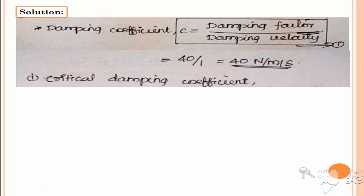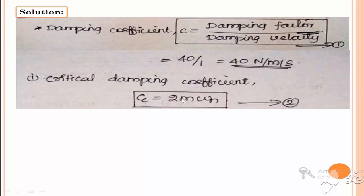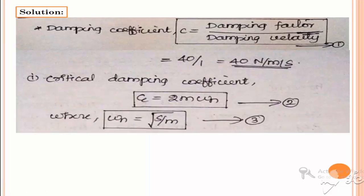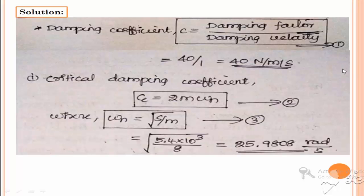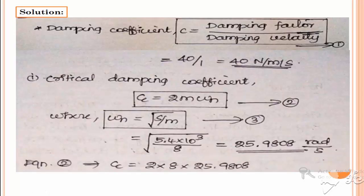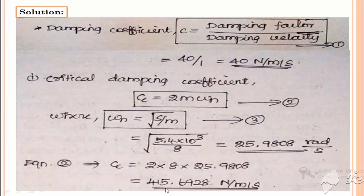The critical damping coefficient cc can be calculated using the formula cc = 2m·ωn, where m is the mass and ωn is the natural angular frequency, calculated as √(s/m). Substituting the values, ωn = 25.9808 radian per second. Therefore, cc = 2 × 8 × 25.9808 = 415.6928 Newton per meter per second.